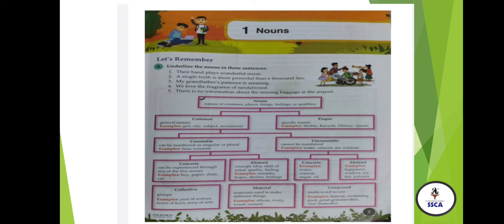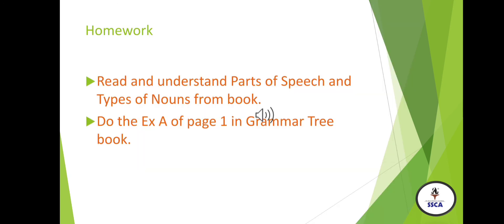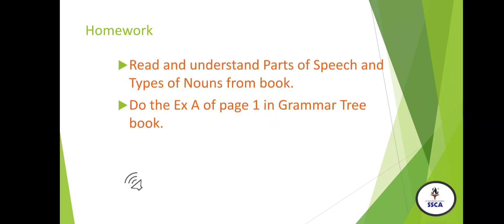Compound nouns are multi-word nouns. For example: haircut, grandfather, honeybee, butterfly. You can see these are the combination of two names, that is why we say these are compound nouns. This is all about the types of nouns. We have discussed the types of nouns. Thank you, class. Take care.